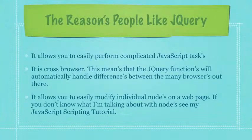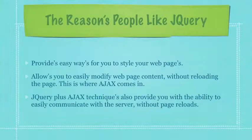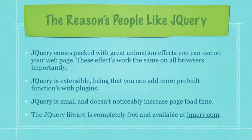So why do people like jQuery? It allows you to easily perform complicated JavaScript tasks. It is cross-browser, which means that the jQuery functions will automatically handle differences between the many browsers out there. It allows you to easily modify individual nodes on a web page — if you don't know what I'm talking about with nodes, you need to see my JavaScript scripting tutorial. It also allows you to easily modify web page content through the use of Ajax techniques without reloading the page, and jQuery plus Ajax techniques provide you with the ability to easily communicate with the server without page reloads. jQuery comes packed with great animation effects you can use on your web page, and these effects work the same on all browsers.